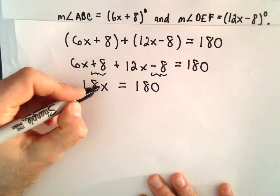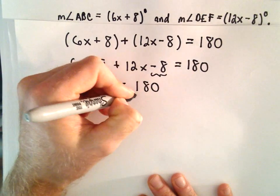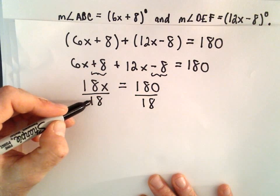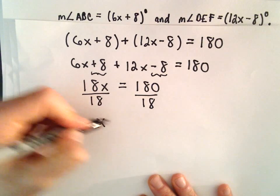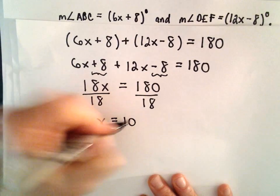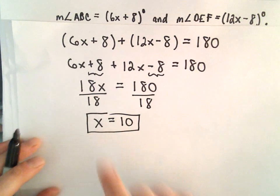To solve for x, since we're multiplying by 18, we can divide both sides by 18. 18 divided by 18 will be 1x. 180 divided by 18 will simply equal 10. So now we know the value for x.